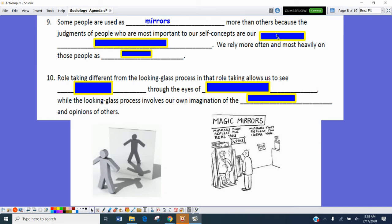For the most part, some people are used as mirrors more than others because of the judgments that people have towards them. And particularly, we use people who are probably the most important people in our lives as these mirrors because they are our significant others. We rely more often and most heavily on those people that we see as our mirrors.